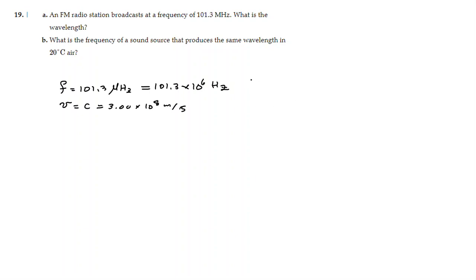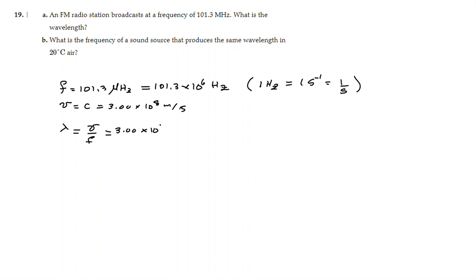I want to recall that 1 Hz is equal to 1 second to the negative 1, or 1 over second. Now we are ready to calculate the wavelength of the FM radio wave, which is equal to the speed divided by the frequency. So this would be 3 times 10 to the 8 meters per second divided by the frequency, which is 101.3 times 10 to the 6 Hz.